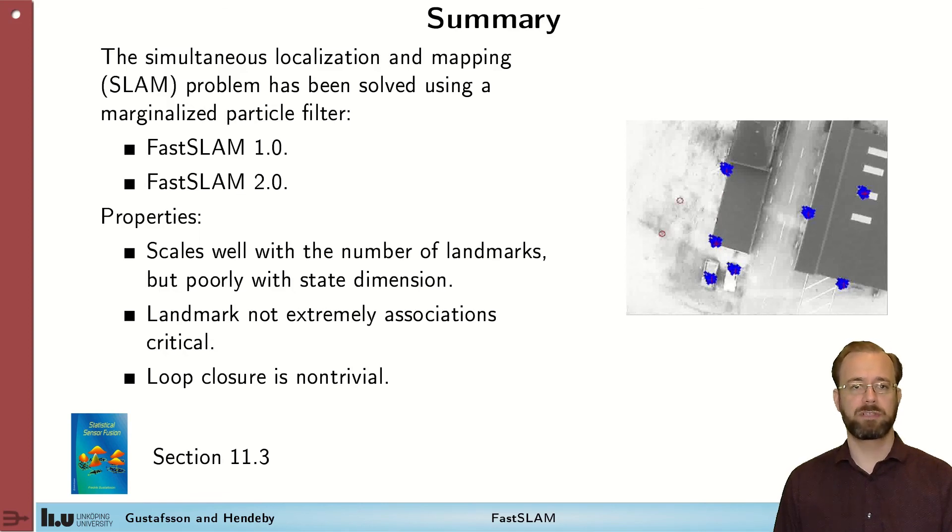This resulted in two methods called the FastSLAM 1.0 and the FastSLAM 2.0 that are quite popular in literature, especially for ground-moving robotic vehicles with lots of landmark measurements, but a small state space. Important properties to highlight is that the methods scale well with the number of landmarks, but poorly with the state dimension.